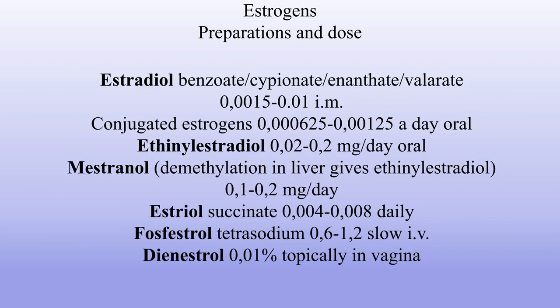Preparations and doses of estrogens. Estradiol benzoate, cypionate, enanthate, valerate: 0.0015 to 0.01 IM. Conjugated estrogens: 0.3125 to 1.25 mg per day orally. Ethinyl estradiol: 0.02 to 0.2 mg per day orally. Mestranol (demethylation in liver gives ethinyl estradiol): 0.1 to 0.2 mg per day. Estriol succinate: 0.004 to 0.008 daily. Phosphestrol tetrasodium: 0.6 to 1.2 slow IV. Dienestrol: 0.01% topically in vagina.